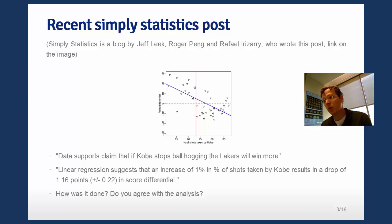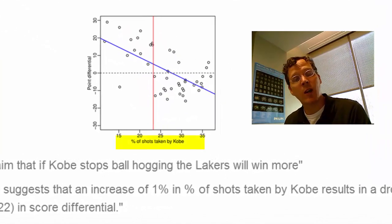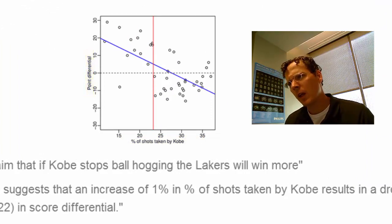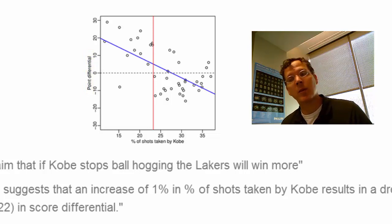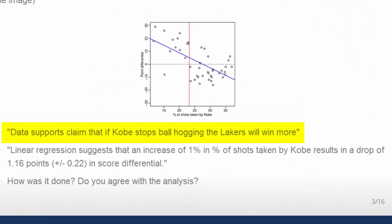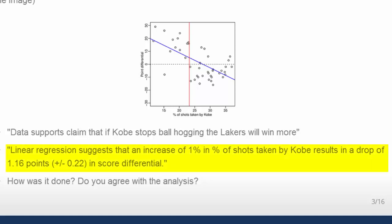Rafa wrote a post talking about ball hogging and players. He has a plot of the percentage of shots taken by Kobe Bryant and the game-specific point differential. He fit a linear regression to it and made some claims in the blog post. For example, one claim was that data supports the idea that if Kobe stops ball hogging, the Lakers will win more. More relevant to this class, he makes the specific statement: linear regression suggests an increase of 1% in percent of shots taken by Kobe results in a drop of 1.6 points, and he gives a standard error in score differential.